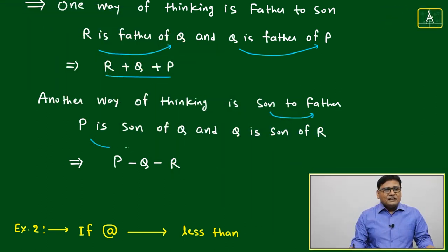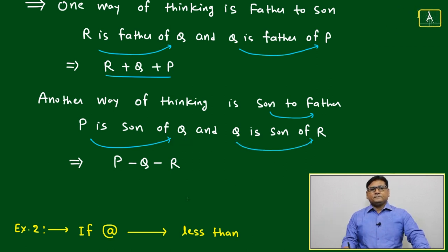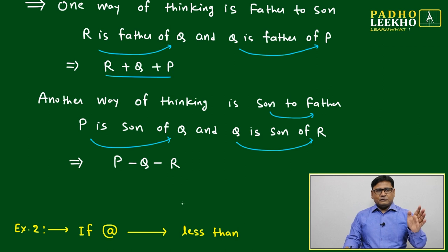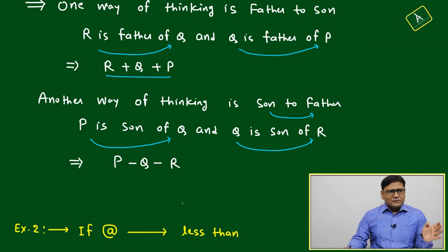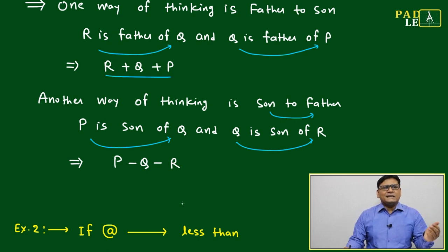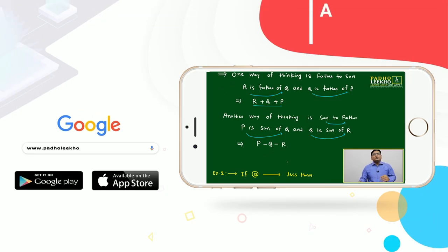P is son of Q and Q is son of R. Last time we thought R is father of Q and Q is father of P. In a similar way, just the opposite direction, we can think P is son of Q and Q is son of R, which means: P minus Q minus R.